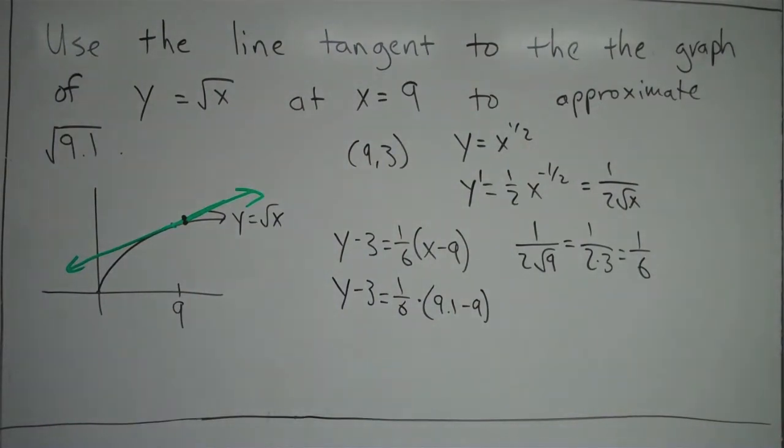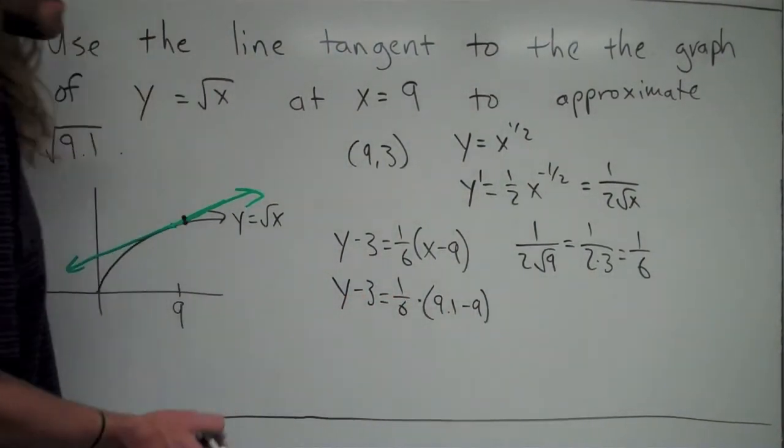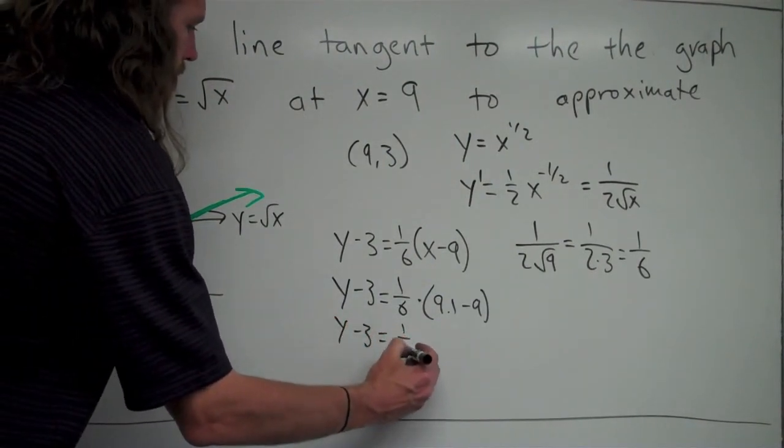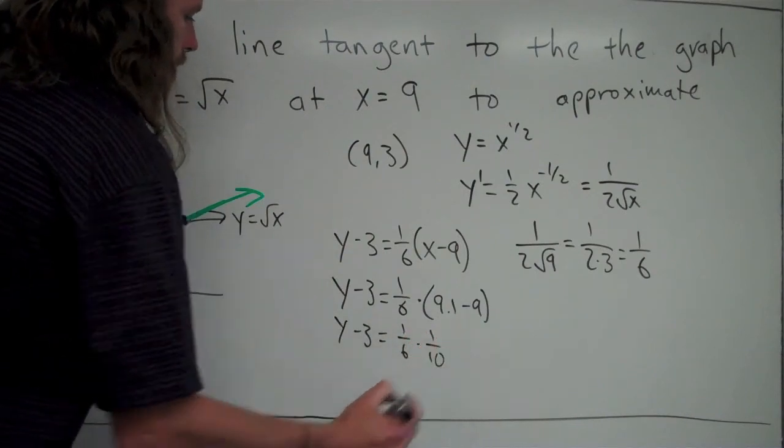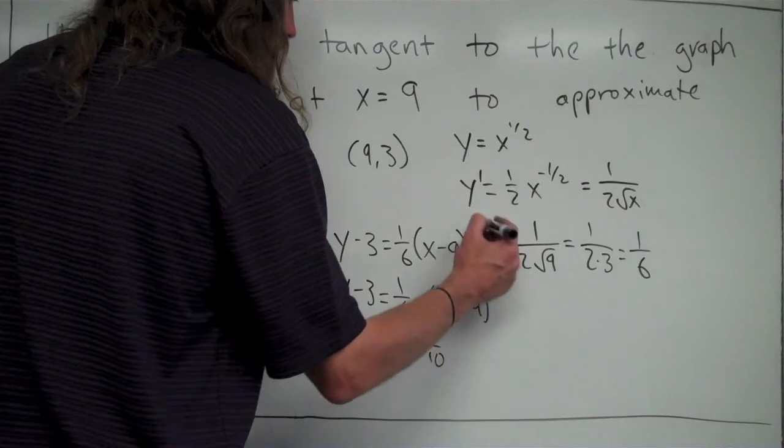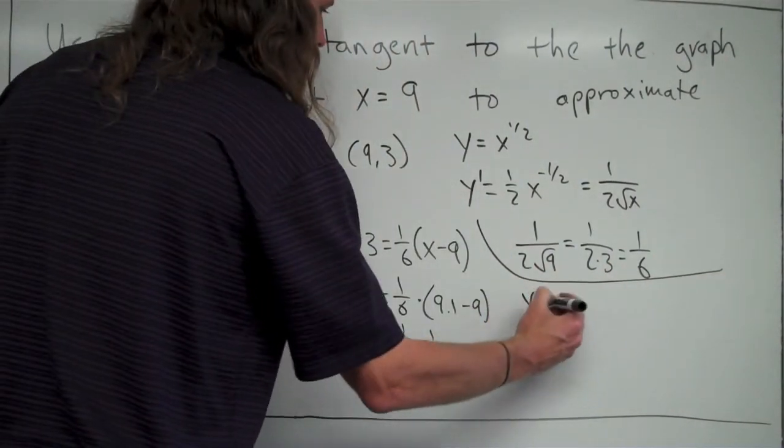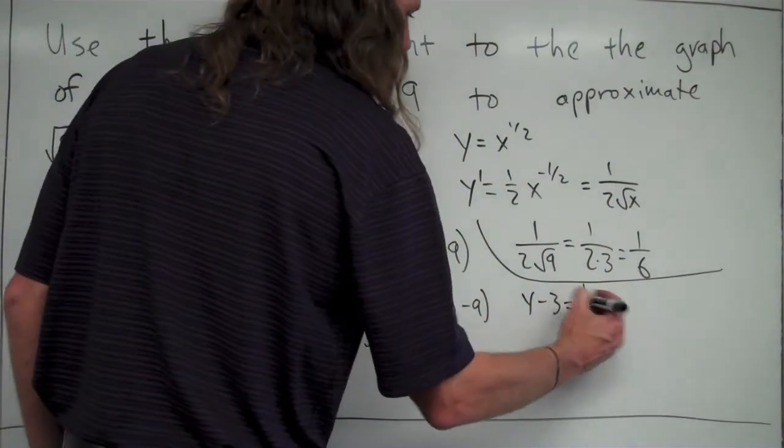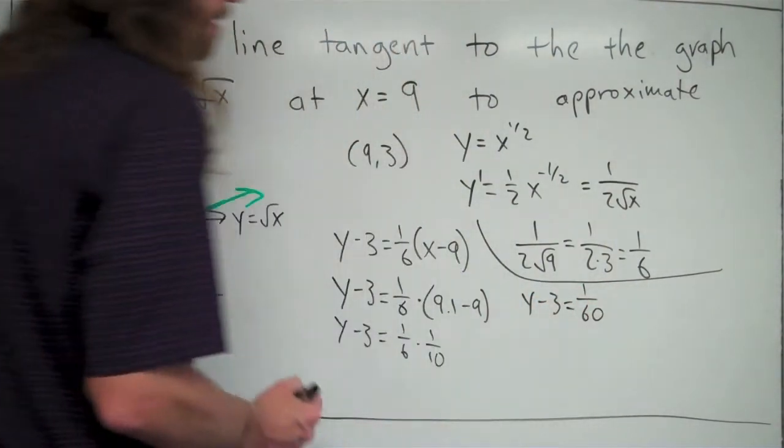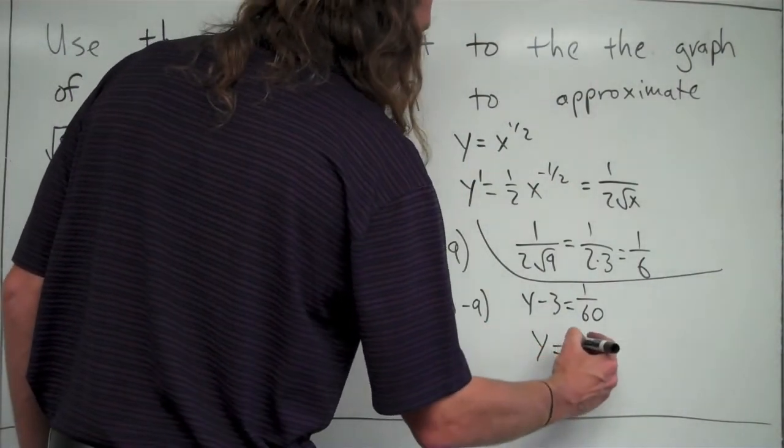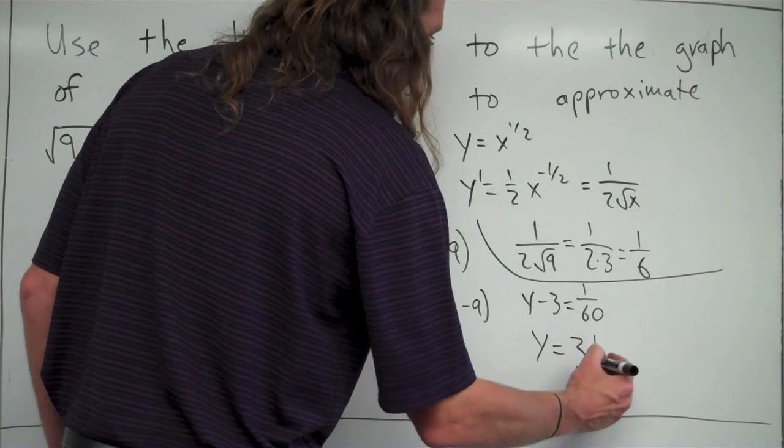Now I've got to do some simplifying, and I'm going to have some fractions to deal with. 9.1 - 9 = 0.1. I'll write that as 1/10 so I can work with fractions. So (1/6)(1/10), when I simplify that, becomes y - 3 = 1/60. When I add 3 to both sides, I get y = 3 + 1/60, or 3 and 1/60.